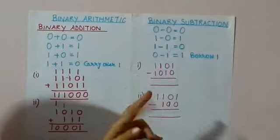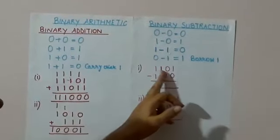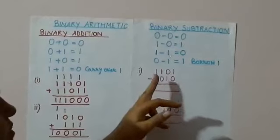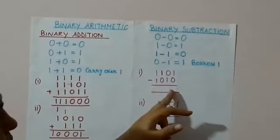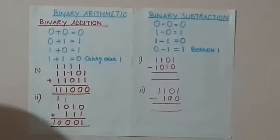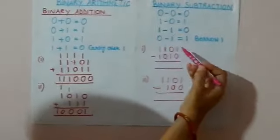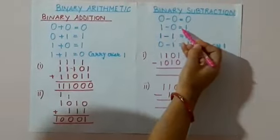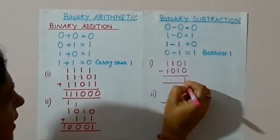Now, write down the first question: 1101 minus 1010. Pay attention and try to understand how we will do this. First, it is 1 minus 0, which means 1. So, I write 1 here.